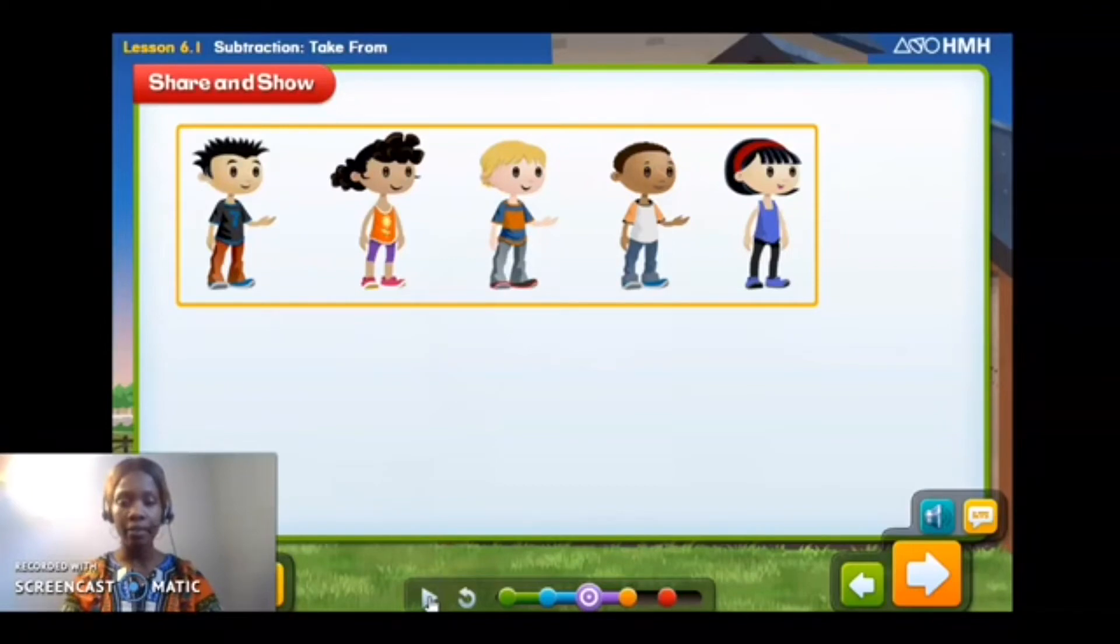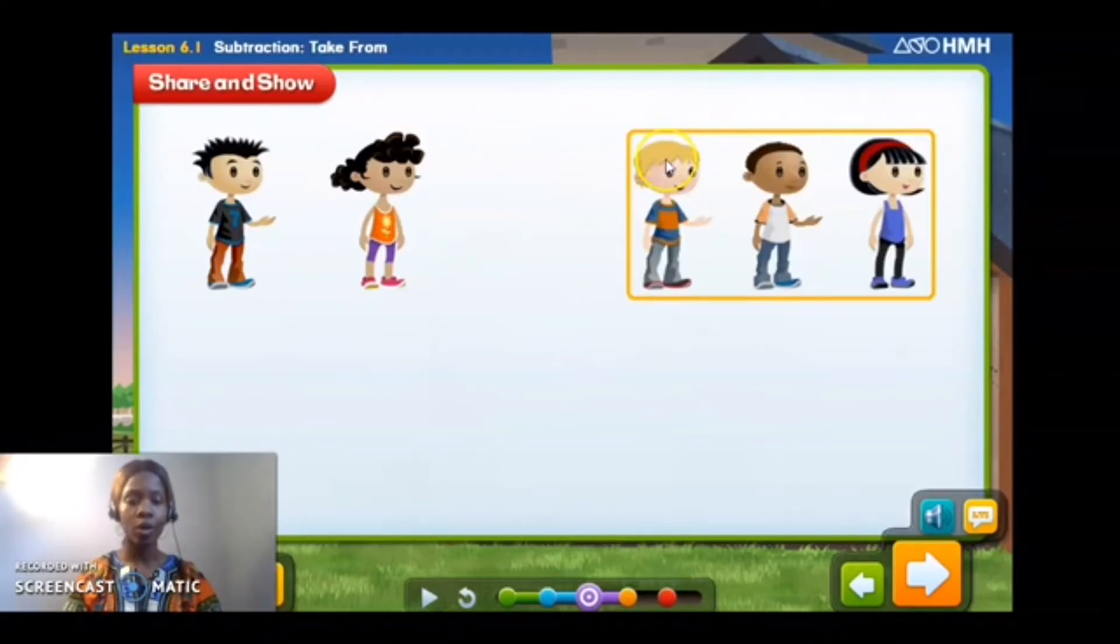Now we have five students at the writing center. One, two, three, four, five. So three students decide to leave the writing center. They're finished with their work and three students are now leaving. So let's take away three: one, two, three.